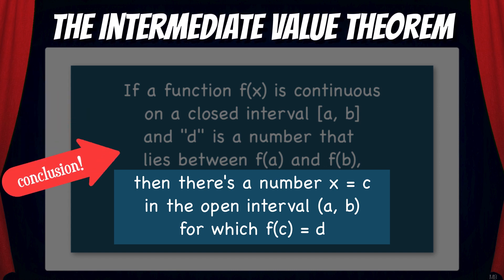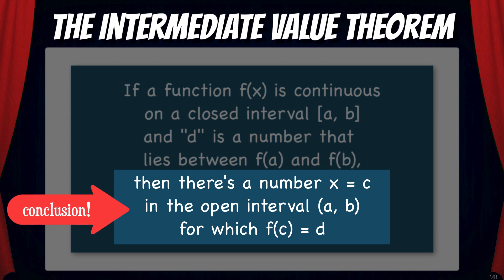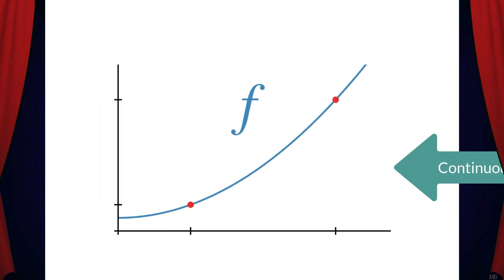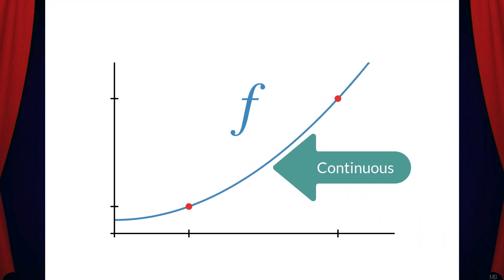Note that the boxed part here is called the conclusion of the Intermediate Value Theorem. Now you may be wondering, how does this relate to the roller coaster analogy? Well, let's look at a diagram to understand how this theorem works.